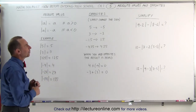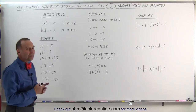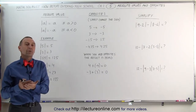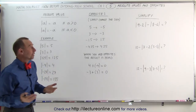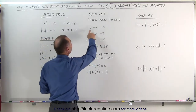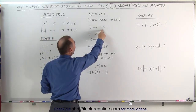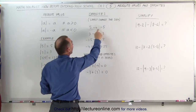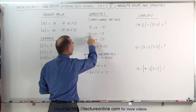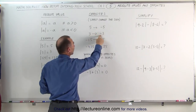What about opposites? When you find the opposite of a number, you simply change the sign. For example, if you have 5 and you want to find the opposite of 5, that's a negative 5. If you have the number 3 and you want to find the opposite of the number 3, you get a negative 3.